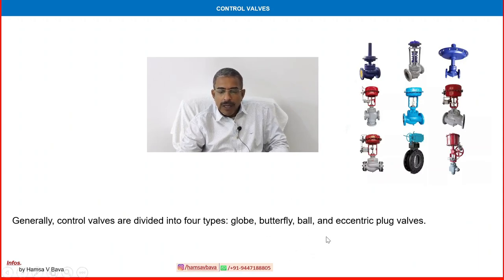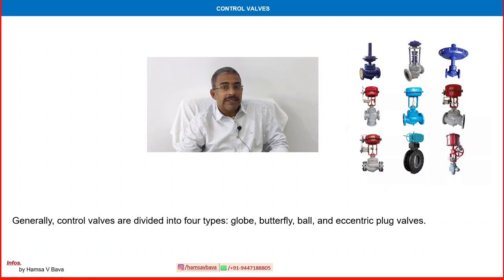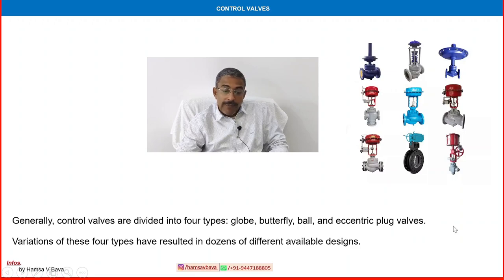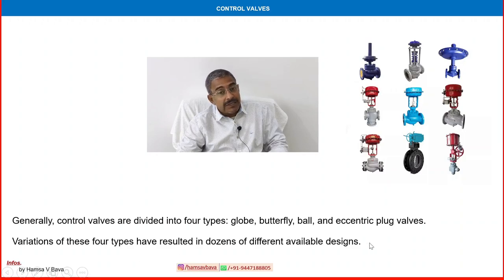In this video, I am focusing mainly on the globe type control valve — its general peculiarities, advantages and disadvantages, design parameters, and operational concepts. These four items we are discussing in this video. Variations of these four main types have resulted in dozens of different available designs. Many core design types are there, but thousands of other designs are based on the core globe, butterfly, ball, and plug valve.